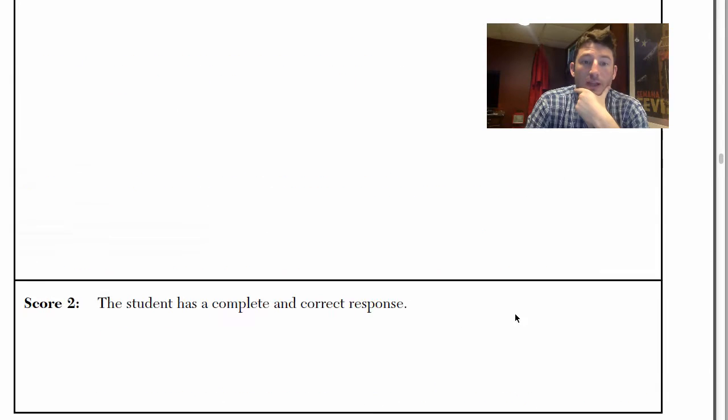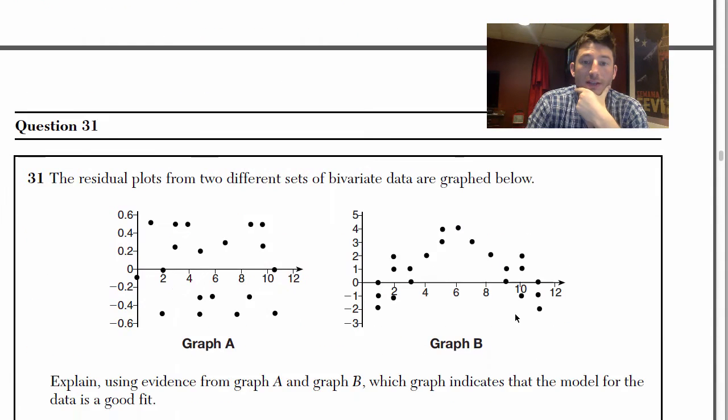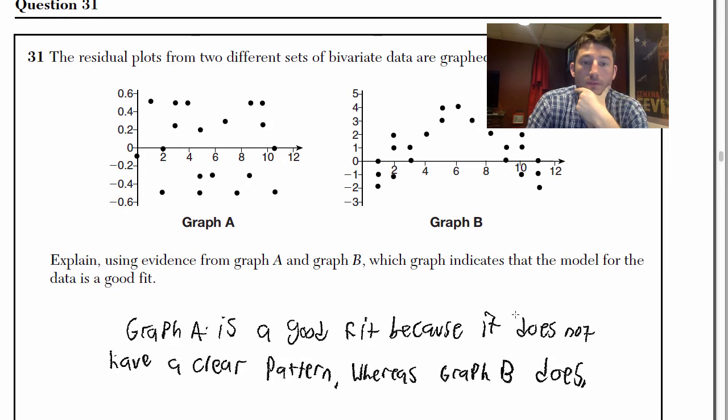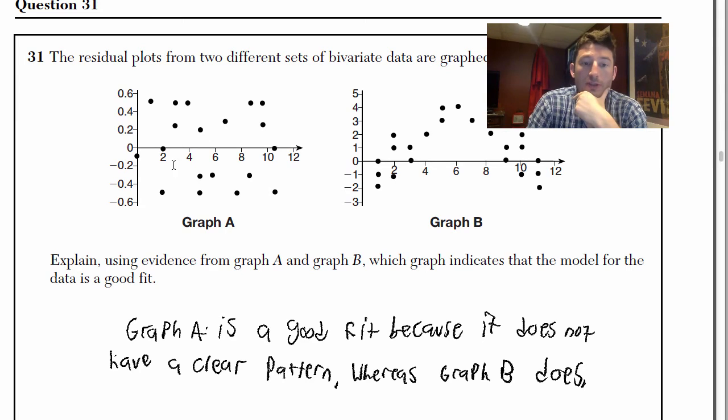And who got zero? Graph B because the dots are tighter together. So there's your zero response, a score of a zero. Tough one to explain, but if we look at the reasons or the ones that got the most points, Graph A is a good fit because it does not have a clear pattern. So it looks like the points are evenly distributed along the line here and there seems to be a pattern here.